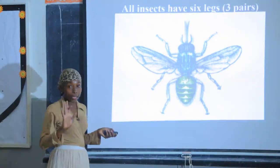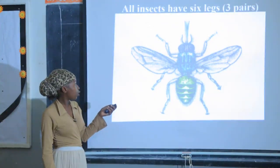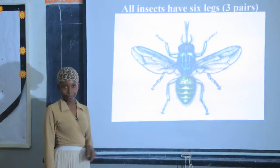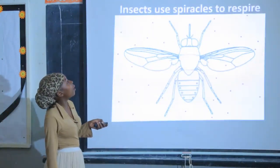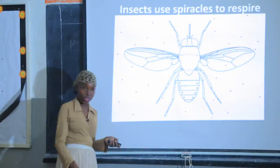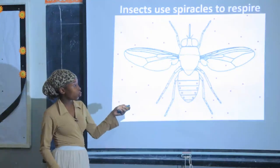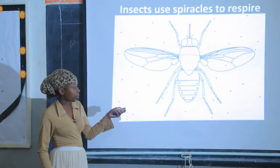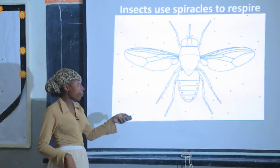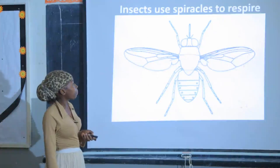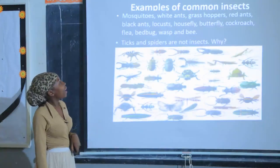All insects have six legs — or three pairs of legs. Let's count together: one, two, three, four, five, six. They also use spiracles to respire or to breathe. These are holes found on the abdomen. So the insect uses the spiracles on the abdomen to breathe.